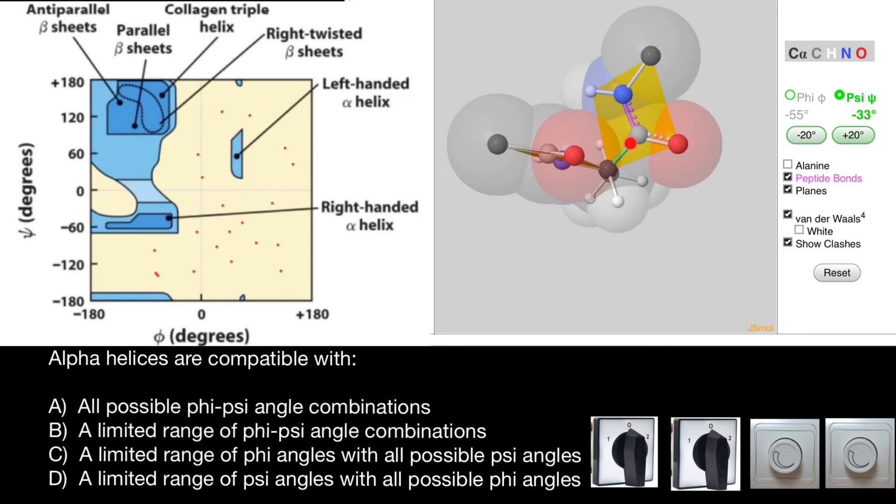It would be possible if our planes would be able to rotate freely, then we would see variants here also, but positions are limited.